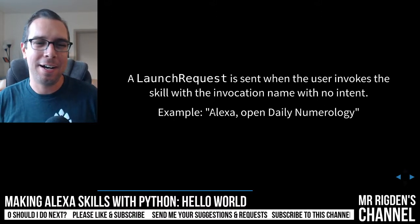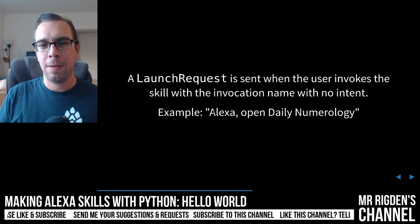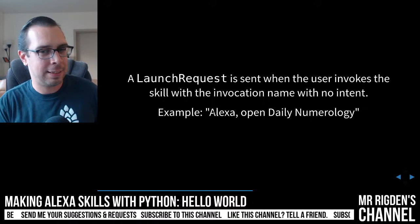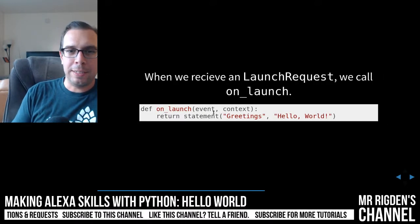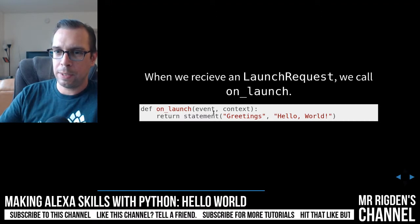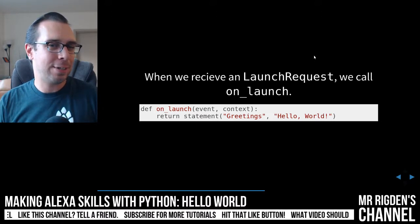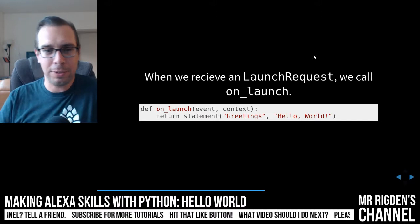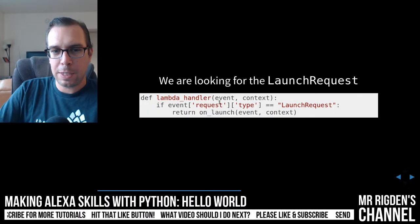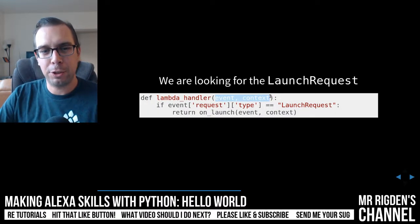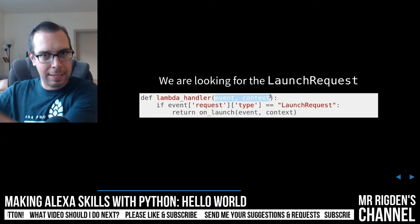A launch request is sent when a user invokes the skill with the invocation name and no intent. When we receive a launch request, we're going to call on_launch. Here's the on_launch function — we're just going to pass all the information we know. What's the information we know in this function? We know there's a variable called event and a variable called context. We're going to pass everything to that other function.